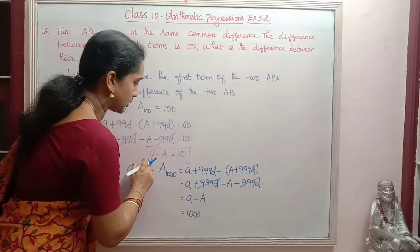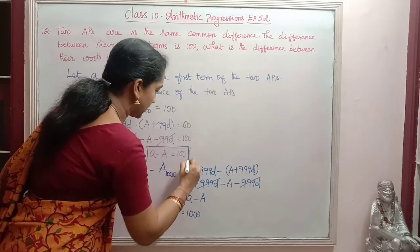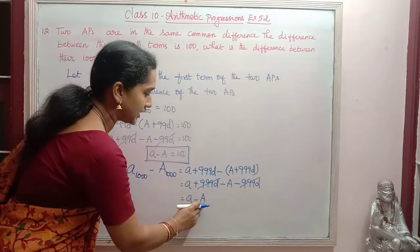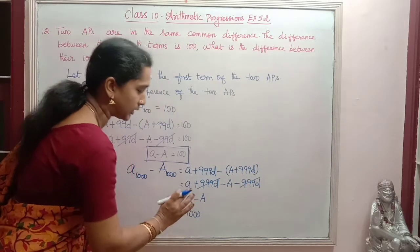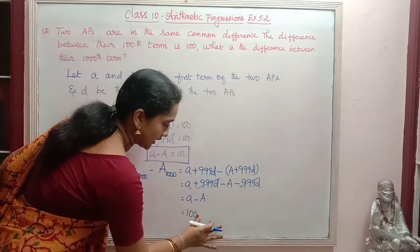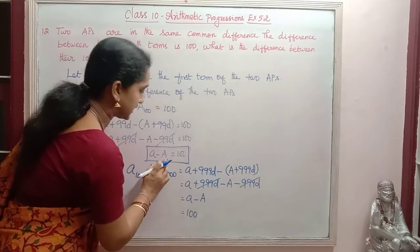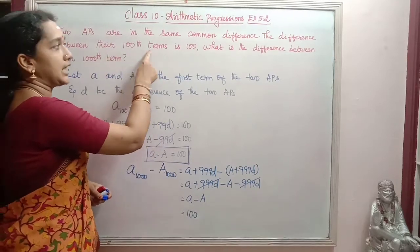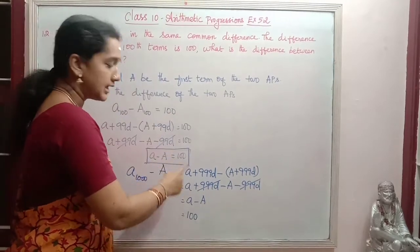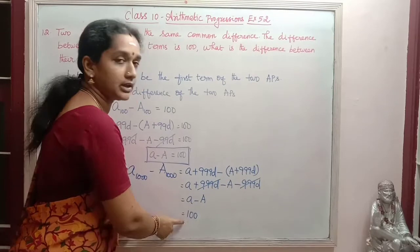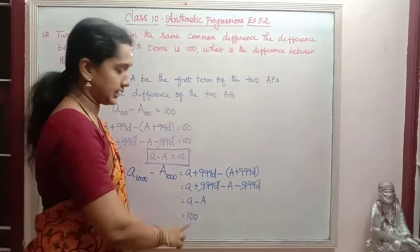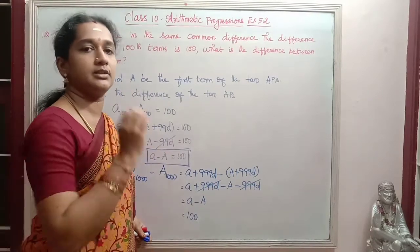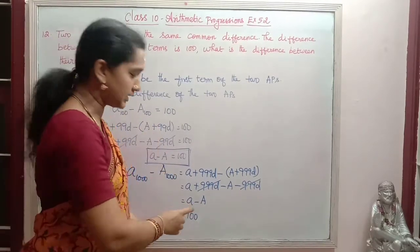Since this is for the same AP, we can equate it. So a − A = 100, which we already found. Therefore the difference between the 1000th terms is also 100. That is what we were asked to find — the difference between the 1000th term is 100.